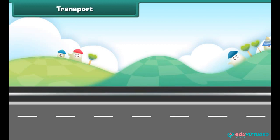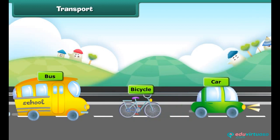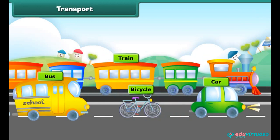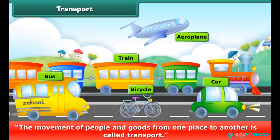Dear friends, we all go from one place to another by different vehicles like bicycle, bus, car, train and airplane. The movement of people and goods from one place to another is called transport.